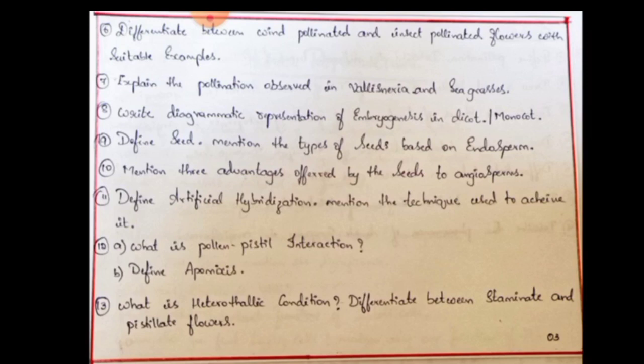Next: Differentiate between wind-pollinated and insect-pollinated flowers with suitable examples — that is an important one. Next: Explain pollination in Vallisneria and sea grasses. In aquatic plants, pollination occurs in water — there is hydrophily in aquatic plants. Next: Draw a diagrammatic representation of embryogenesis in dicot or monocot — so the dicot or monocot embryo diagram is required.